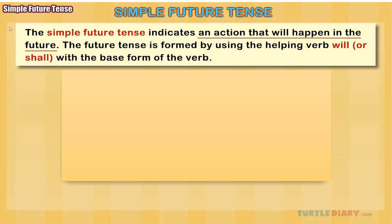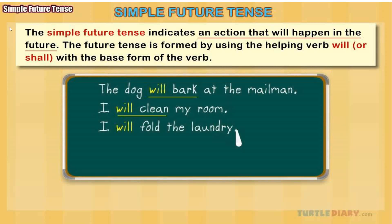We have not seen the future, but we can try to make it good or happy by working hard in the present. The future tense is formed by using the helping verb 'will' or 'shall' with the base form of the verb. 'Shall' is used with first person — that is, 'I' and 'we' only — while 'will' can be used with any noun or pronoun.